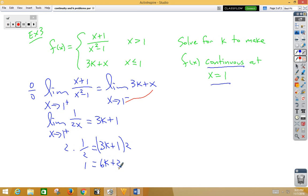Then we would have negative 1 is equal to 6k and k is negative 1 sixth.